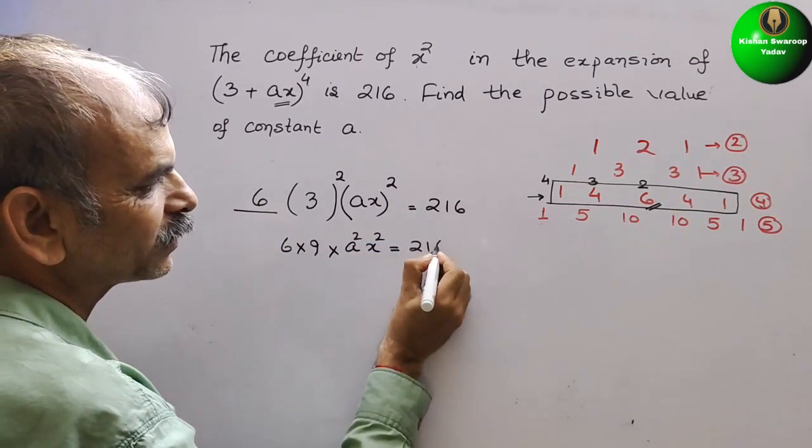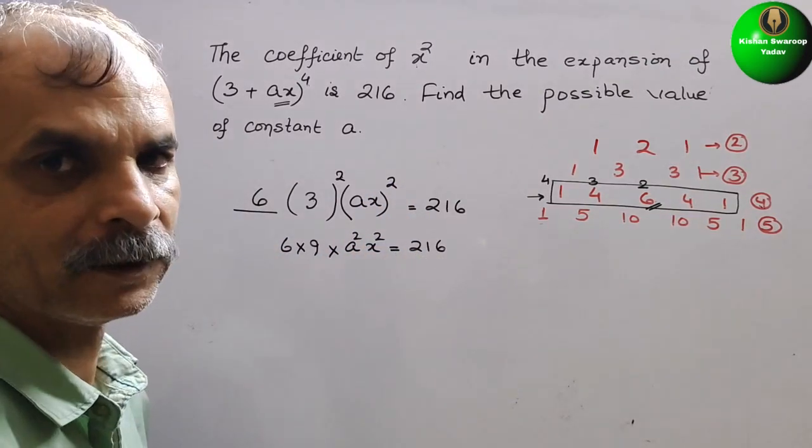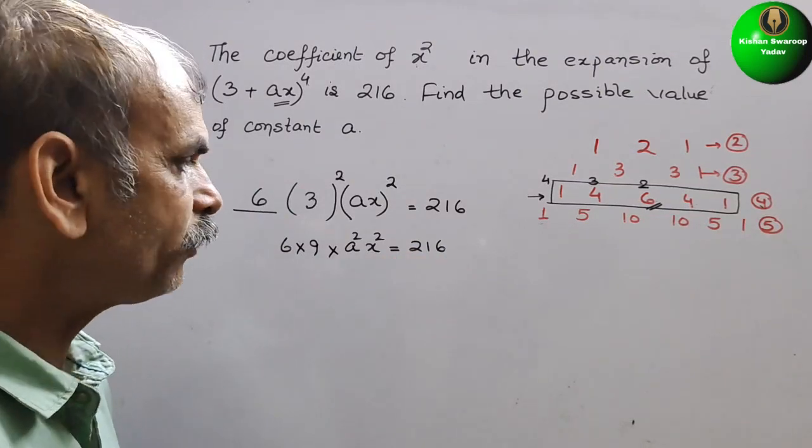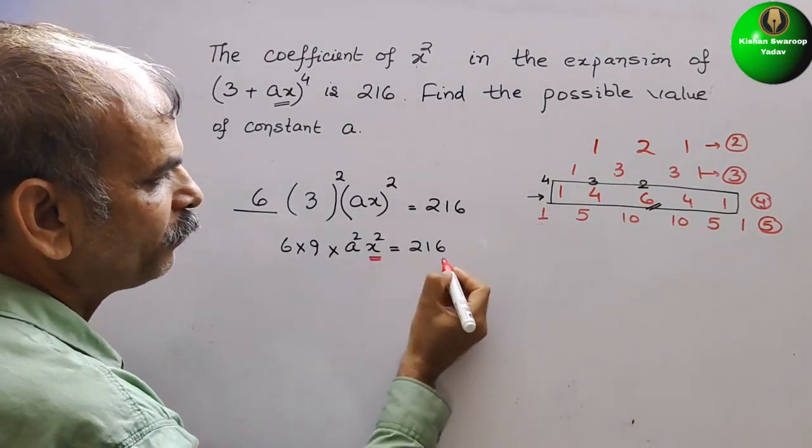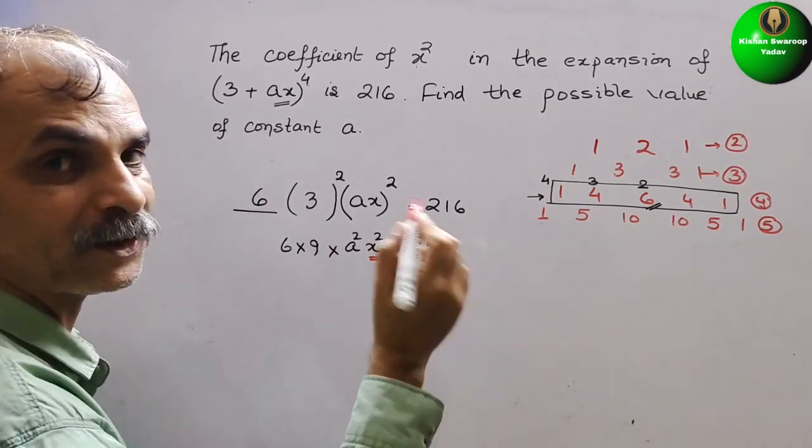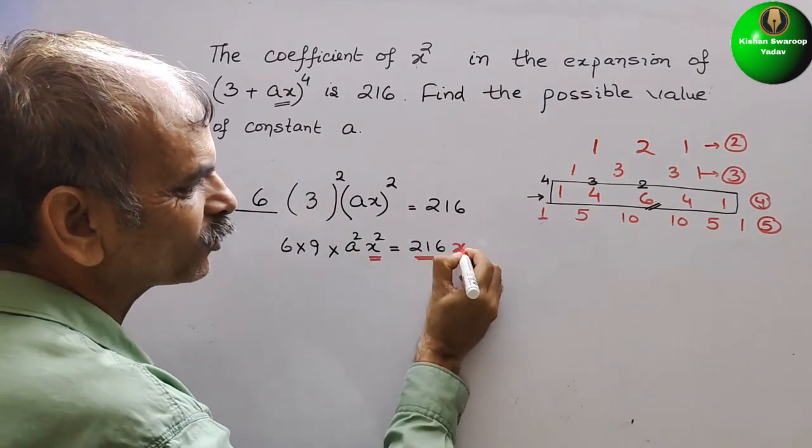And we will get x². That is equal to 216. They have told like that. So here we need not to see this x². This is the coefficient of x².